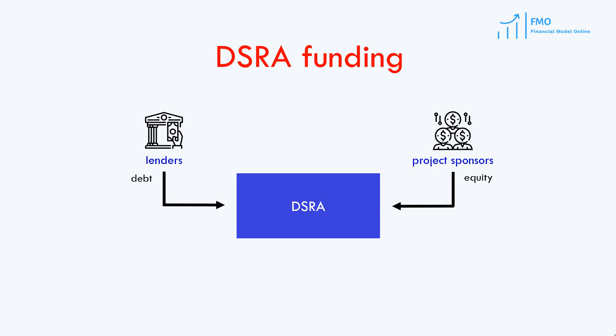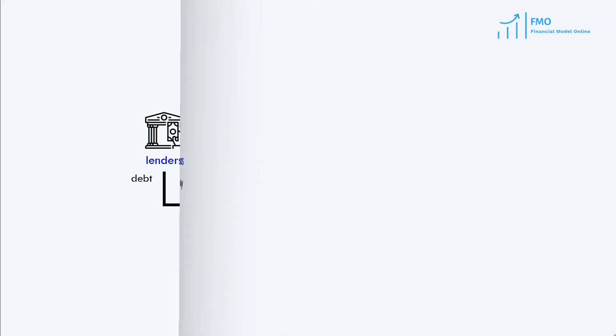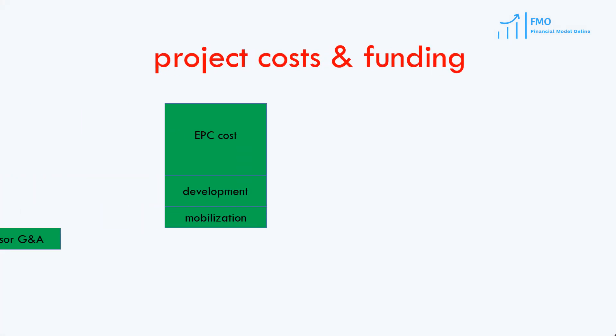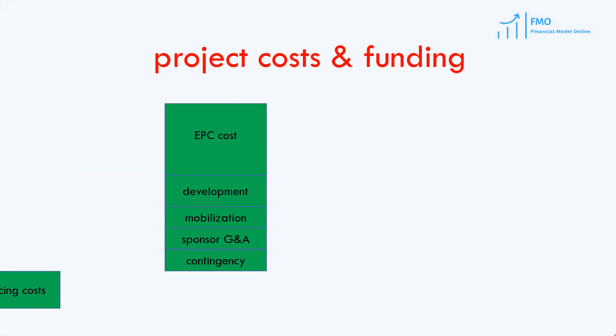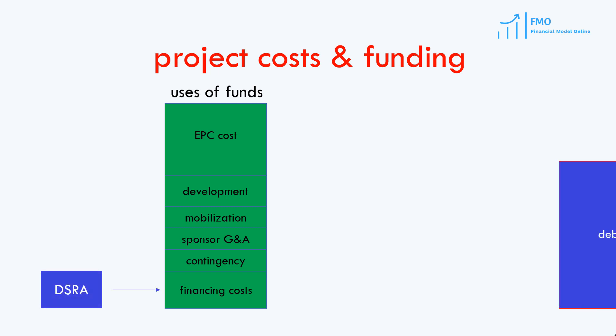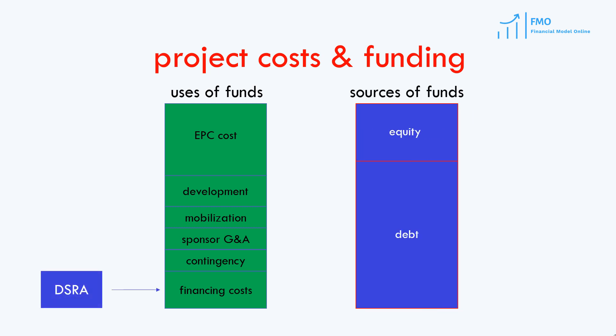In this case, the funding of the Debt Service Reserve Account will reduce the equity valuation and internal rate of return. Debt Service Reserve Account is generally considered as a part of the financing costs in the project's capex. However, it is usually not included in the project's fixed assets.